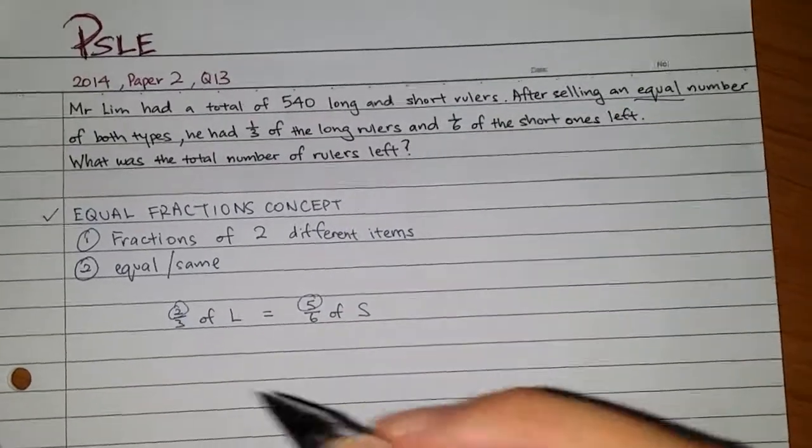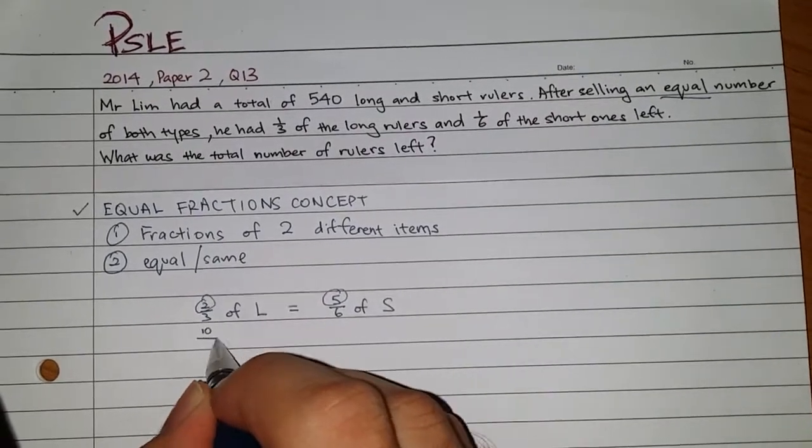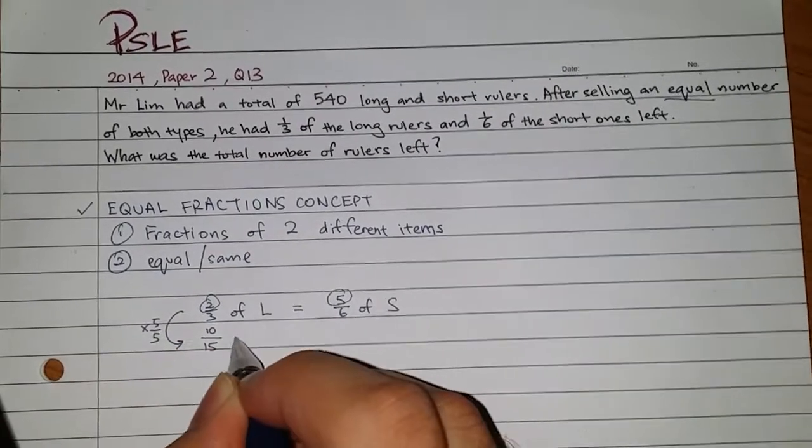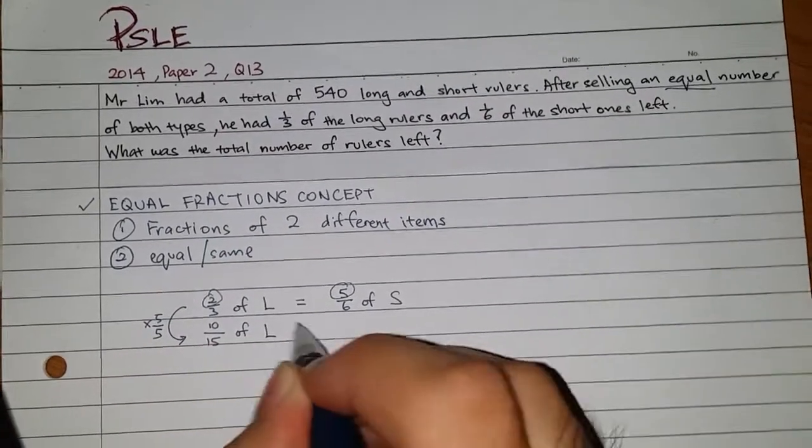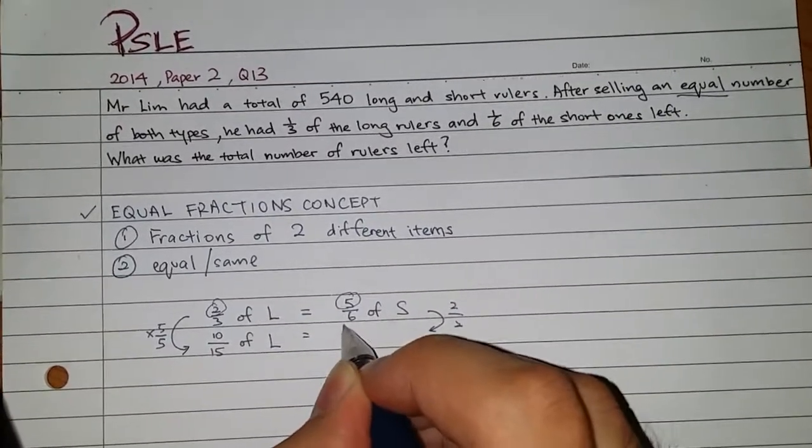I just say that it's equal because that's what the question asked. For this concept we are not going to make denominator the same. Why? Because the question didn't say that the total number of long is the same as the total number of short. But what is it saying is that the total number sold is the same. So we are going to make numerator the same. Over here the common multiple is 10. So for my left side I times 5 out of 5, and on my left I times 2 out of 2.